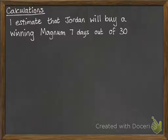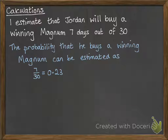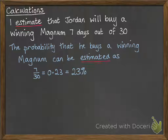We're going to estimate that Jordan will buy a winning magnum 7 days out of 30. This means that the probability that he buys a winning magnum can be estimated as 7 out of 30, or 0.23, which can also be represented as 23%. It doesn't really matter how you express the probability — it can be a fraction, a decimal, or a percentage. It's very important, though, that you say that it is an estimate. Since we're simulating this, you can get different results different times, and somebody else running the same experiment would get a slightly different result. We have to always talk about this being an estimate.